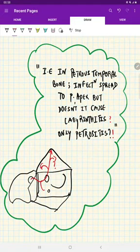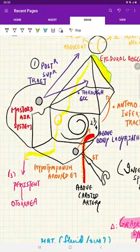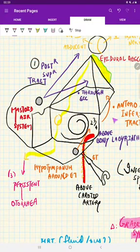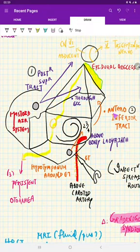The answer is the tracts—infection spreads through the posterosuperior tract and anteroinferior tract. The posterosuperior tract passes above the bony labyrinth. The anteroinferior tract is anterior to the anterior wall, inferior from the hypotympanum, around the eustachian tube, developing and reaching the petrous apex.